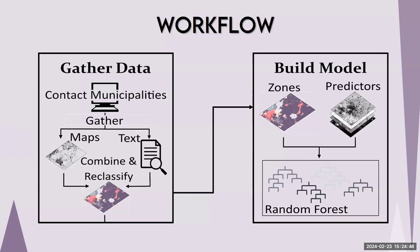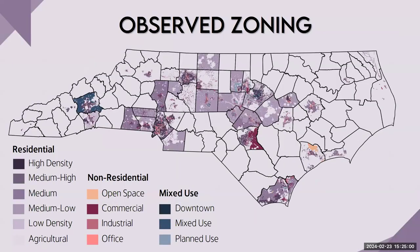Once we had our predictors and our zones, we went ahead with a random forest machine learning approach and were able to predict across the entire state of North Carolina. Looking at the observed zoning map, notice that we have varying amounts of zoning data available per county. Some counties like Randolph County in central North Carolina have almost 90-95% of zoning data gathered. Alternatively, Wilkes County in western North Carolina has data for only about 10% of that county. And then we have counties like Hyde on the coast where we didn't gather any data at all.